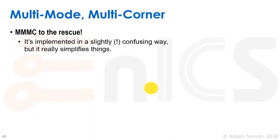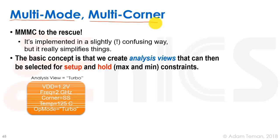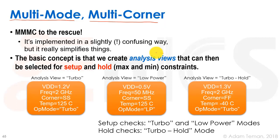Multi-mode multi-corner to the rescue. As its name implies, we define many different modes and many different corners, and the tool handles loading, running timing, running optimization, and re-checking — all in an automated way. After the initial setup, we as users don't have to do anything else. The implementation is a bit complex and confusing, but once we understand it, it really simplifies things. The basic concept is that we create something called an analysis view, which can be checked for setup or hold constraints, and since this is MMMC, it contains both a mode and a corner.